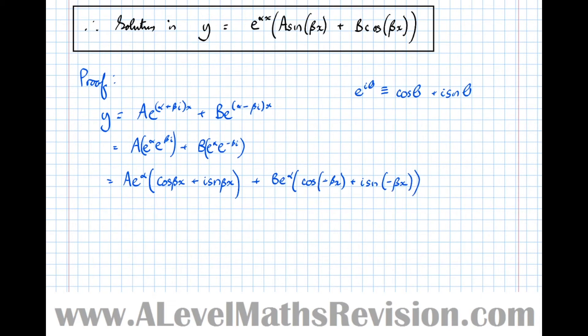Now notice that these all have an e^(αx) in common. So let's take that out as a factor. So e^(αx), then we've got A cos(βx) + Ai sin(βx) + B cos. And cos(-βx) is the same as cos(βx) by symmetry of the cos graph.